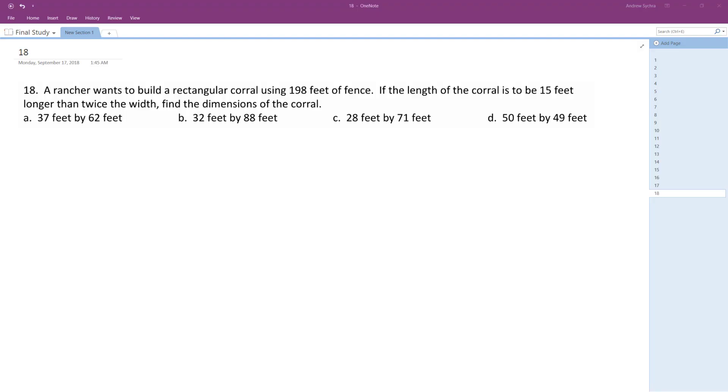So we have a rancher that wants to build a rectangular corral using 198 feet of fence. If the length of the corral is 15 feet longer than twice the width, find the dimensions.